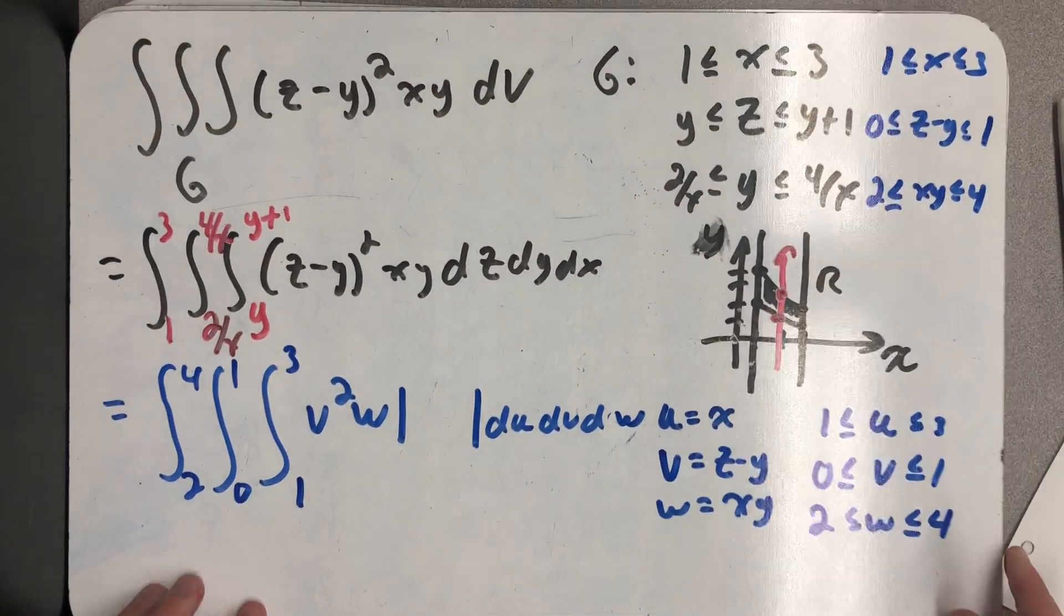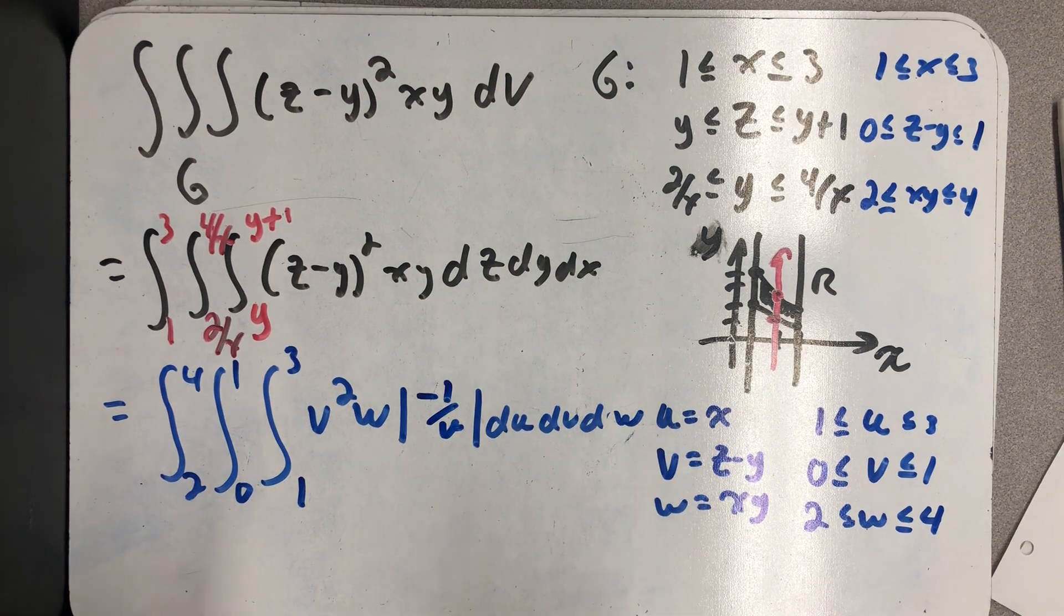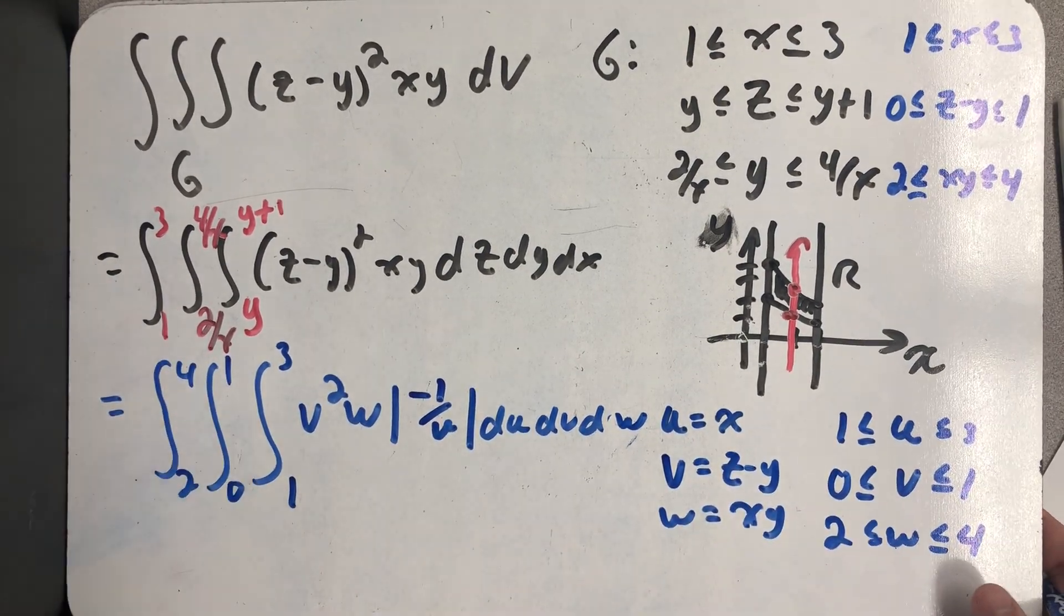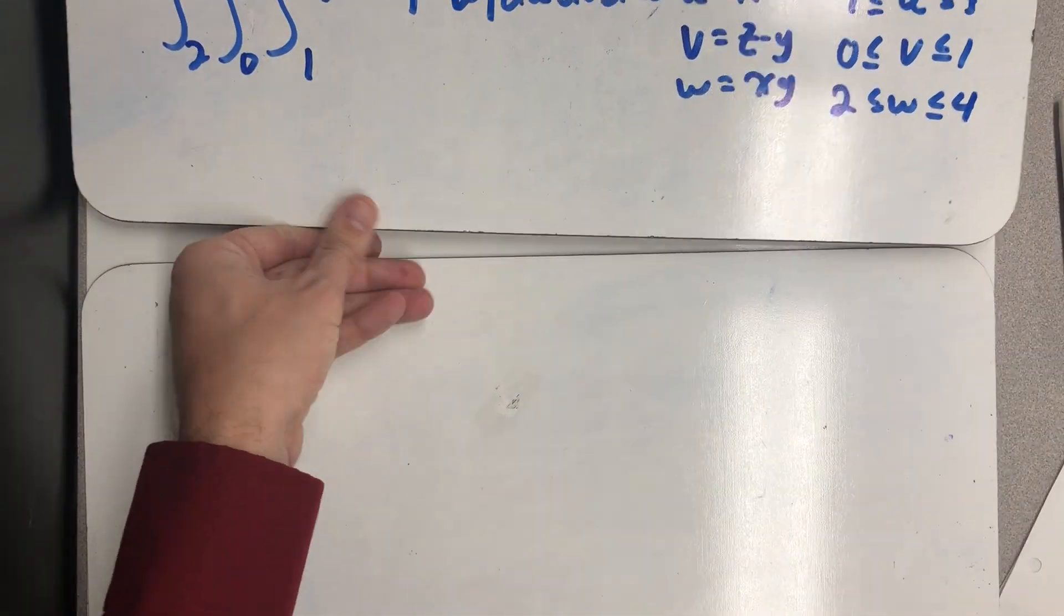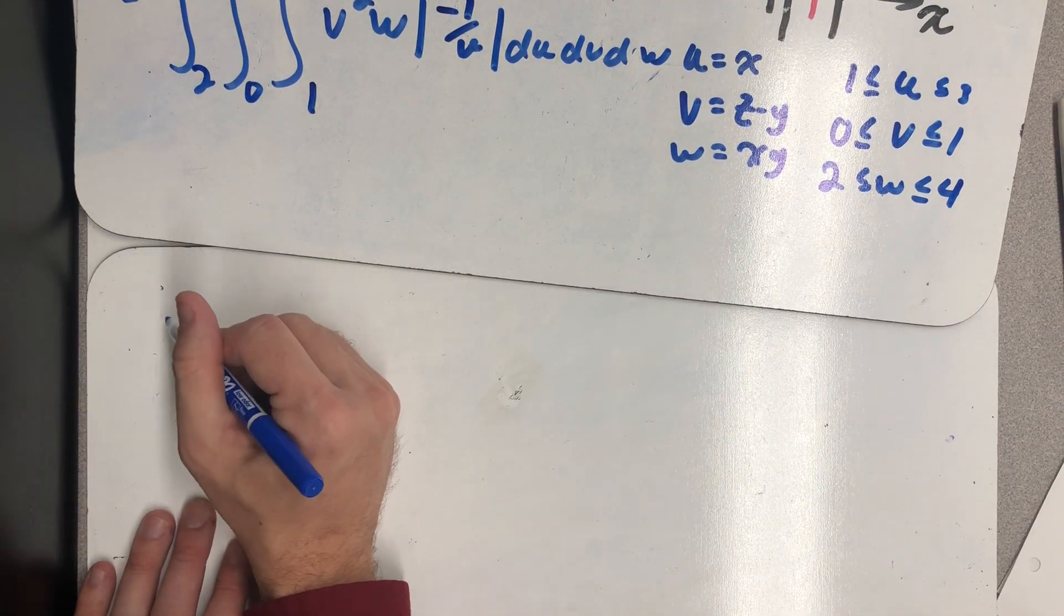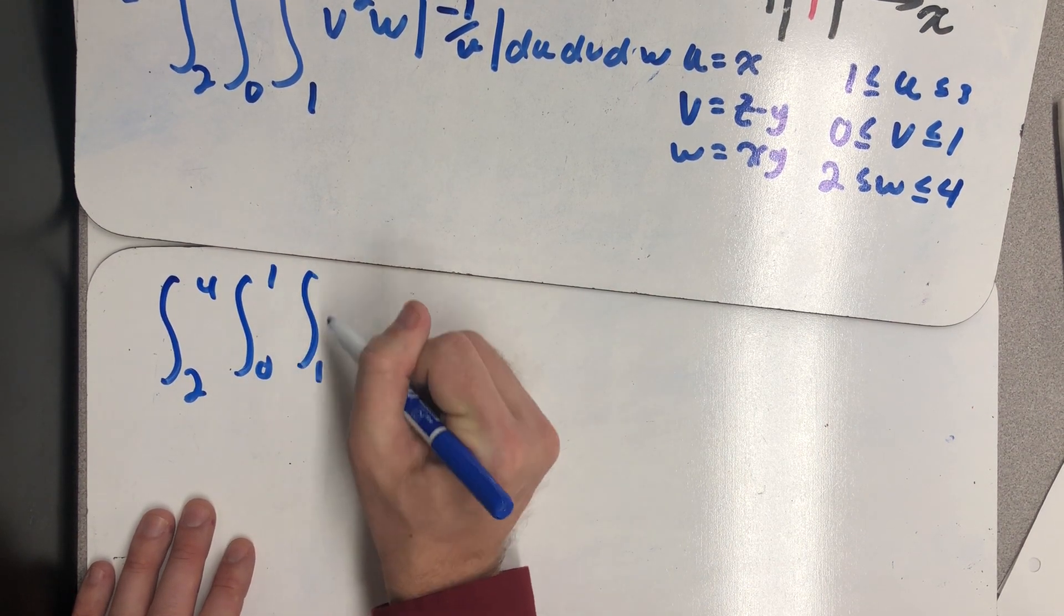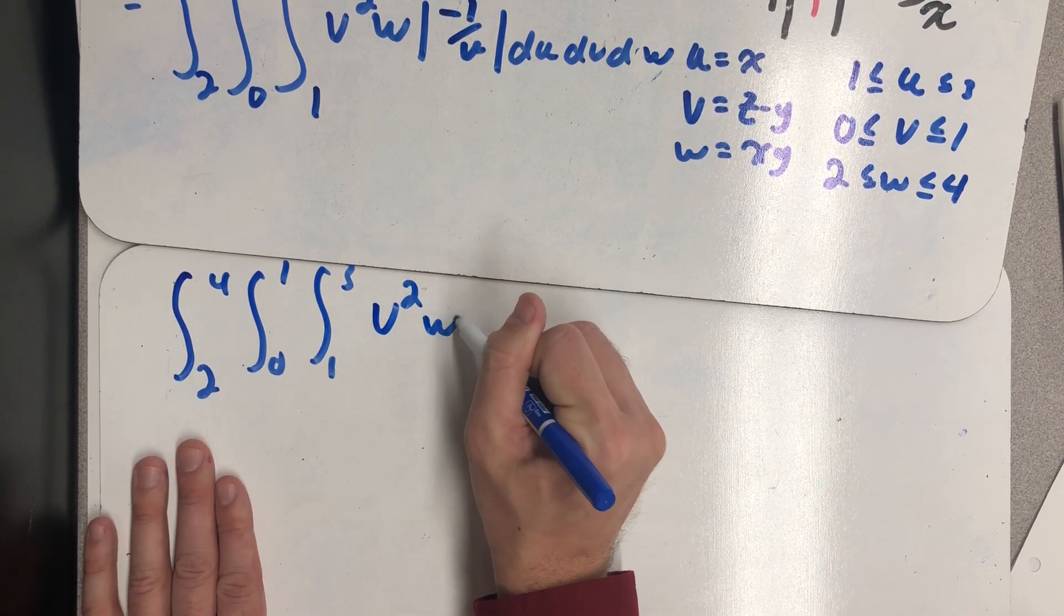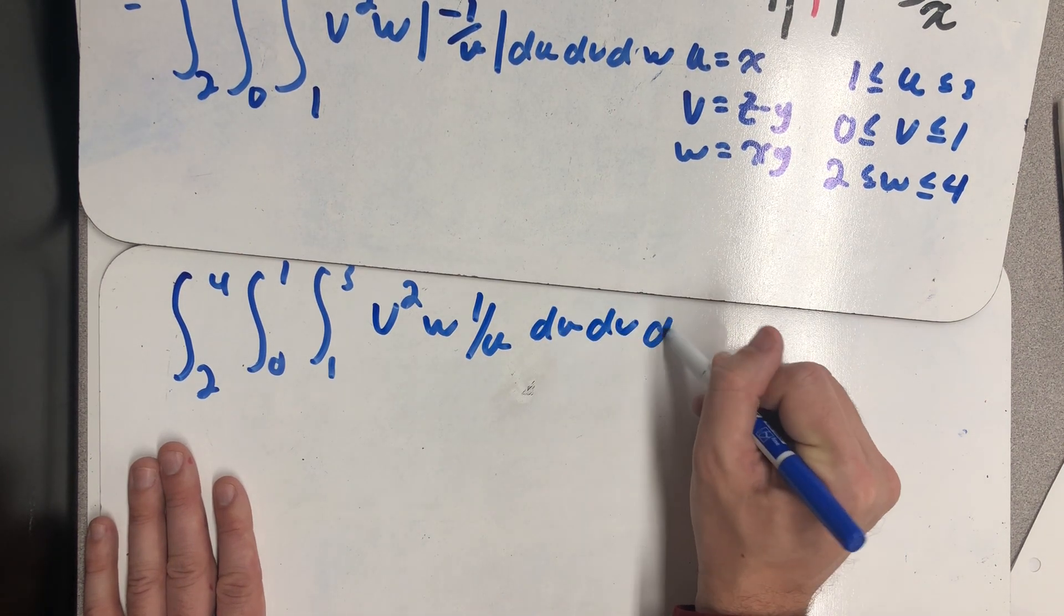Coming back to this board, now that's a minus one over u in there. And the absolute value says just call that a one over u. Okay, nicely enough, I know u's positive. So that helps me a little bit too. So now I just need to integrate that. So let's see, that's an integral from two to four, then zero to one and one to three, actually in the other order, v squared w, and then times one over u, du, dv, dw. And now we're ready to integrate.